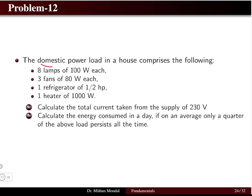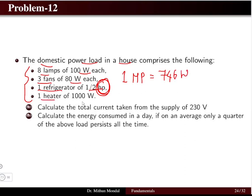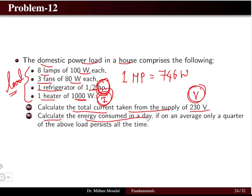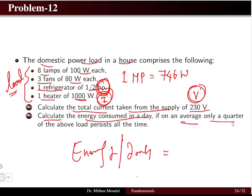Problem twelve: a domestic house load comprises eight lamps of 100 W each, three fans of 80 W each, one refrigerator of 0.5 horsepower (1 HP = 746 W), and one heater of 1000 W. Calculate the total current from a 230 V supply, and the energy consumed per day — given that on average one quarter of the load operates for 24 hours.